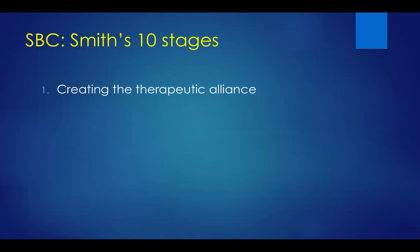In SBC, like all therapies, the first step is to create a therapeutic alliance — getting to know the client, using empathy, unconditional positive regard, and genuineness to really strengthen that alliance. Then the therapist will specifically ask clients to identify their strengths — maybe strengths they already know they have, along with strengths the therapist may have already noticed during the alliance-building process.